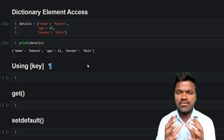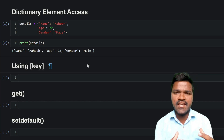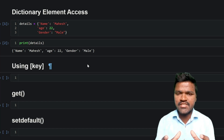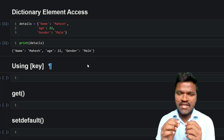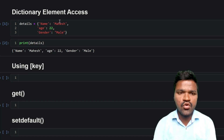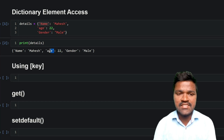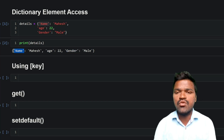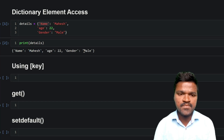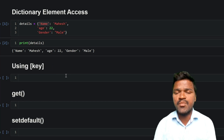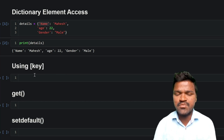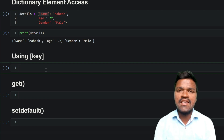Dictionaries are unordered collections, so we cannot use indexing the way we do with lists, tuples, or strings. Dictionary values can only be accessed using keys. For example, the key 'name' gives the value 'mahesh', 'age' gives 22, and 'gender' gives 'male'. One way to access values is using the index operator, but instead of passing index numbers, we pass keys.